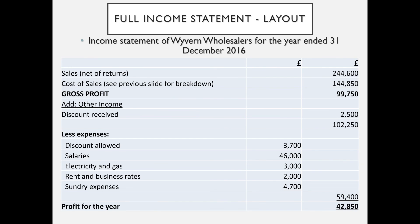We list the overheads and running costs: discount allowed, salaries, electricity and gas, rent and business rates — business rates is paid in the UK, a bit like council tax that businesses pay to the local council. Sundry expenses covers odds and ends that don't warrant their own heading, such as canteen expenses or postage and stationery. We add these expenses up to get a total of $59,400 and deduct that from the figure after gross profit. This gives us the profit for the year — $42,850 — which we'll add on to the owner's capital account when we get to the statement of financial position.